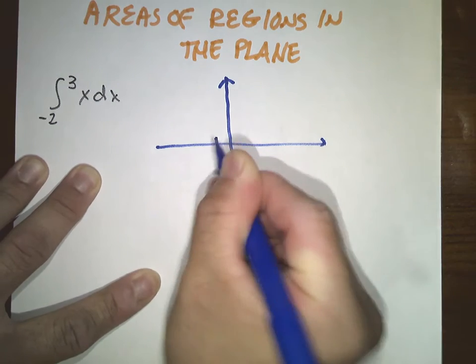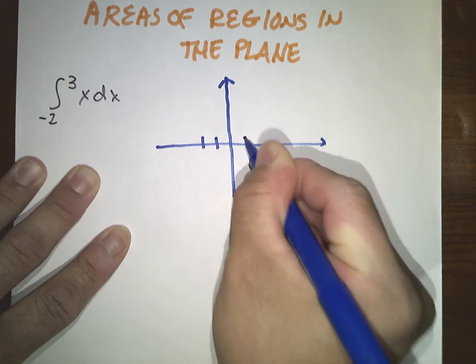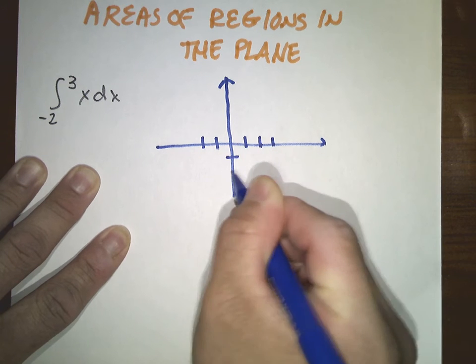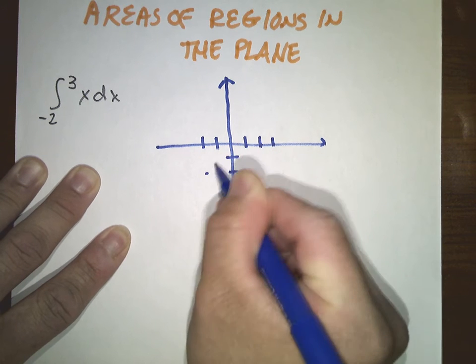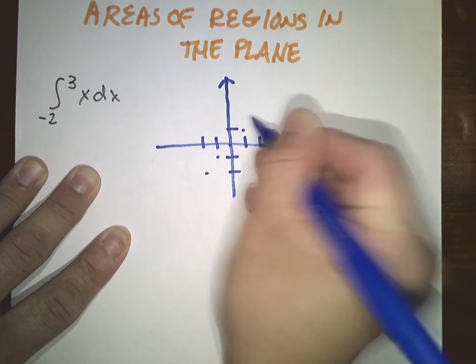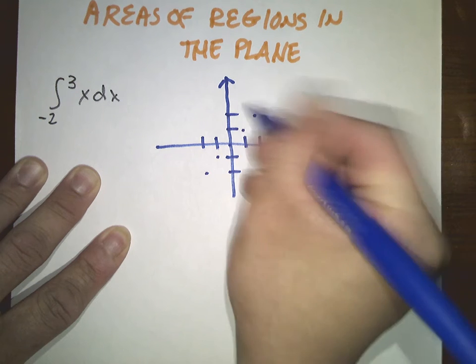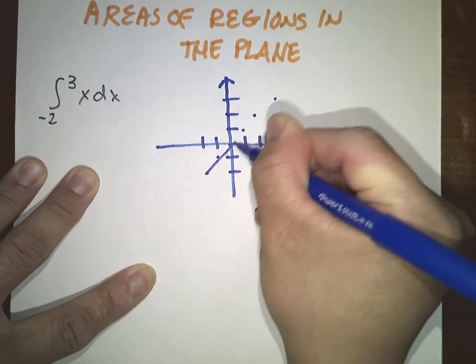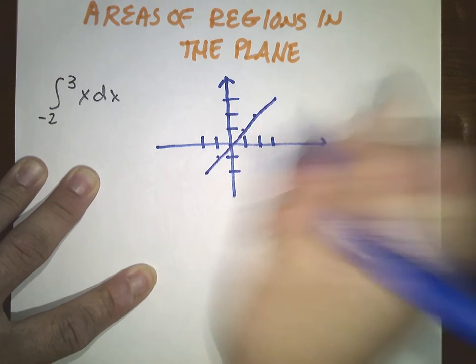Here is negative 2, 1, 2, 3, negative 2, negative 1, 0, 1, 2, 3, and it looks like this.